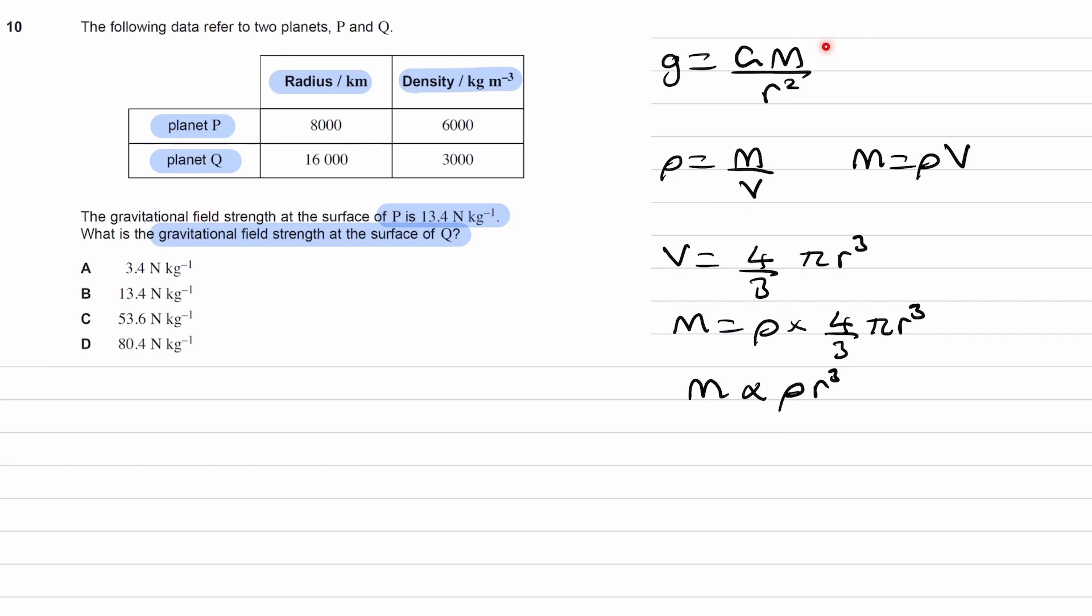For our gravitational field strength equation, gravitational constant is a constant. So g is proportional to m over r squared. We can replace the m with rho r cubed. So g is now proportional to rho r cubed over r squared. The r's cancel out partially to give g is proportional to rho r.